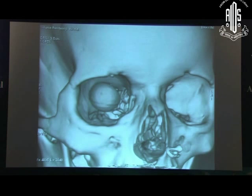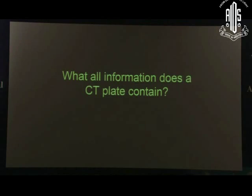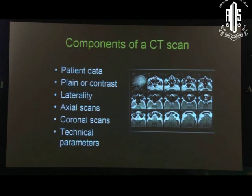One quiz question for you — what exactly is this? This is the abnormal eye: an anophthalmic eye with an orbital implant very well centred in the orbit; this is the normal orbit. So this is the bone obviously, no soft tissue is shown and the implant shows up. What all information does a CT plate contain? It contains patient data — you must identify the patient before you start interpreting CT scans, as scans can get exchanged in the radiologist's office.